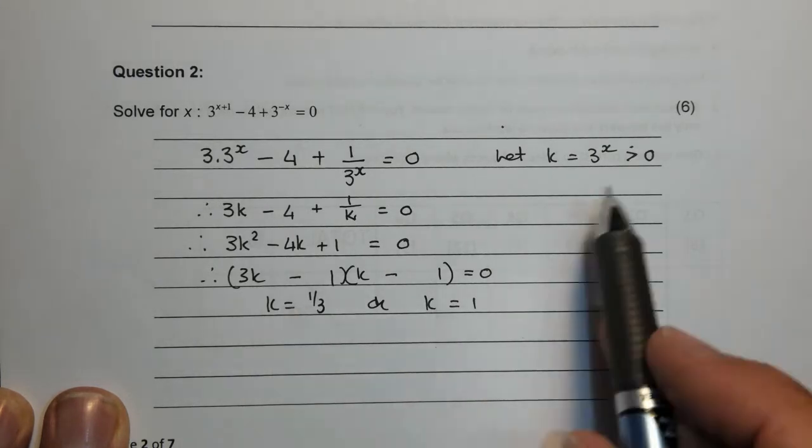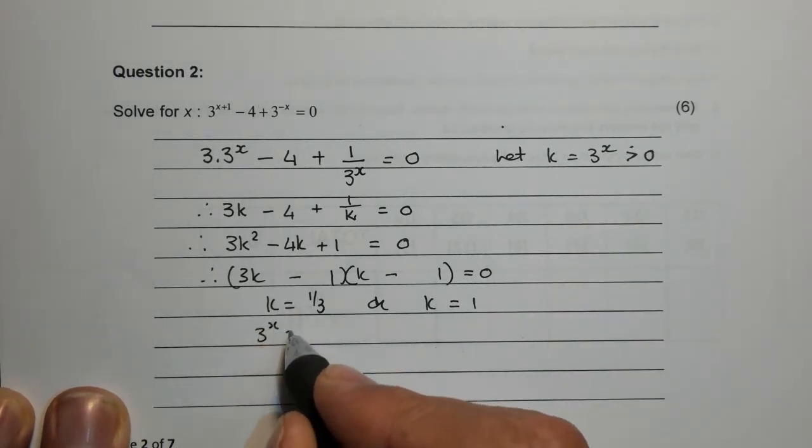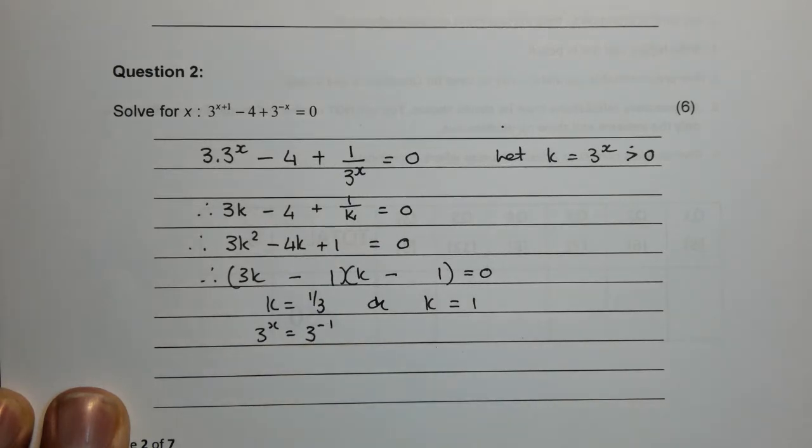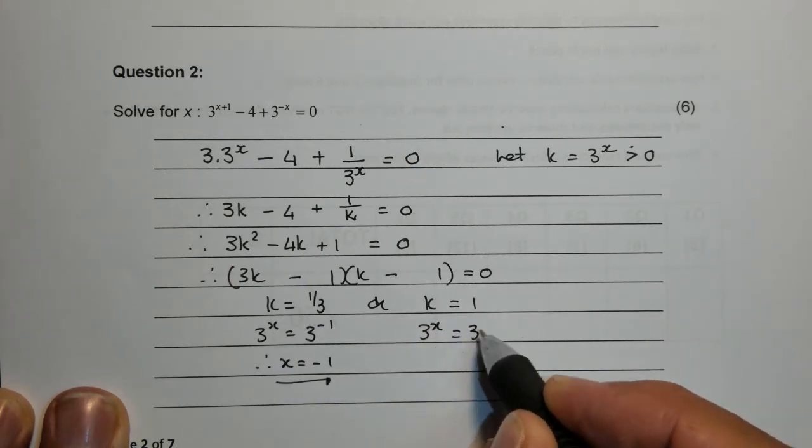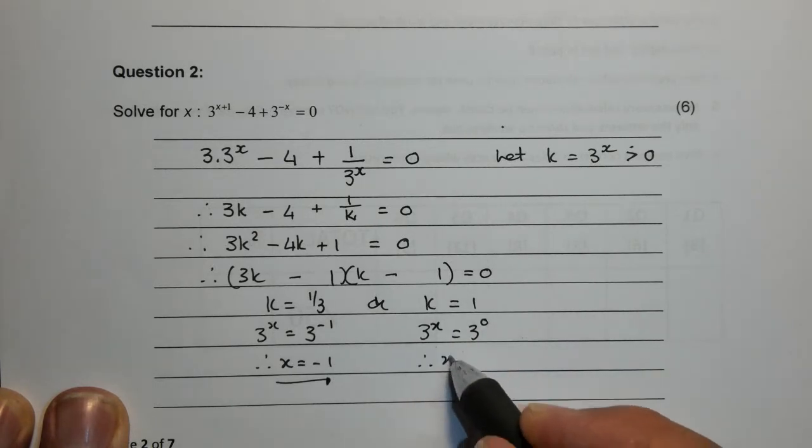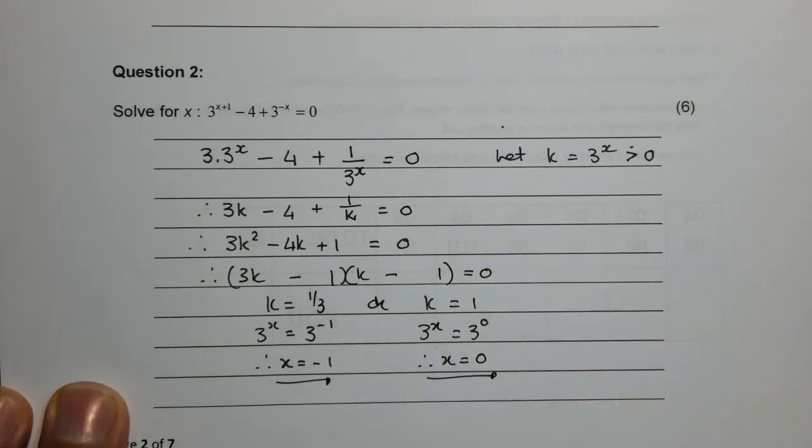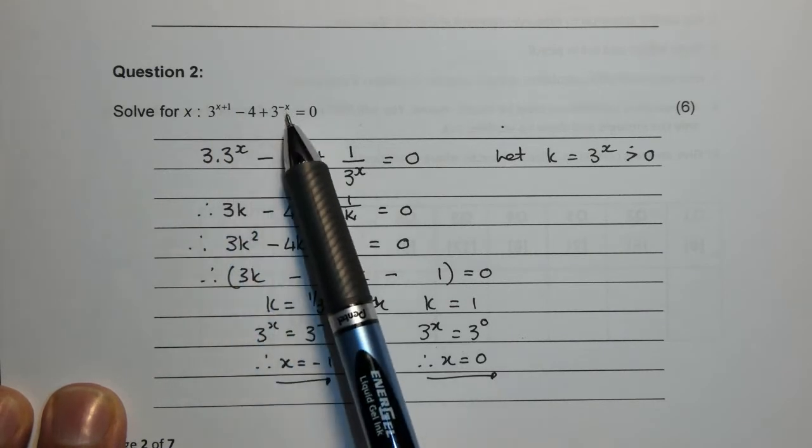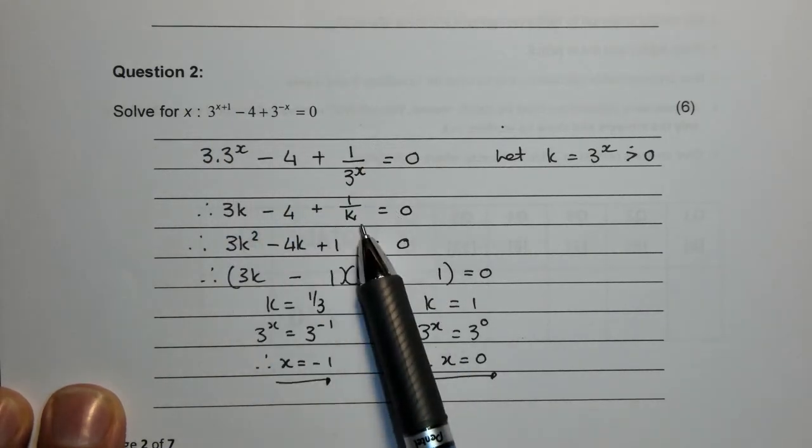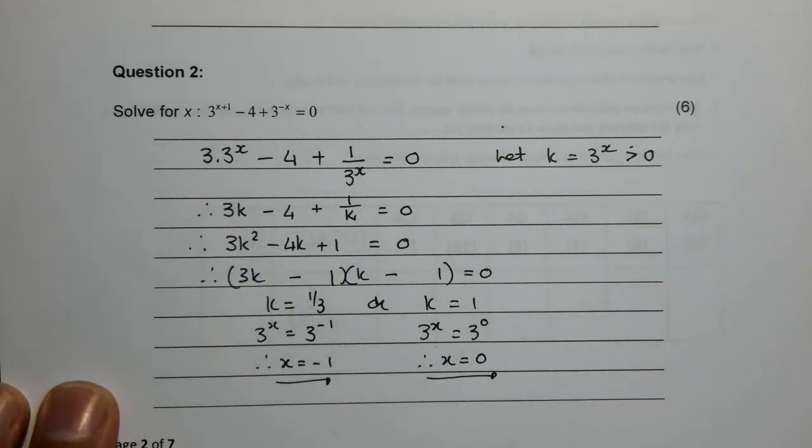We weren't solving for k we were solving for 3 to the x, so 3 to the x is equal to 3 to the minus 1, which in this case means x is minus 1. And here 3 to the x is 1 and we all know that 1 is 3 to the 0. So in this case x is equal to 0. You can see how I made it easier. I broke my powers up made my negative powers positive. The moment I saw what's going on here I introduced the k method and it made the problem much easier.